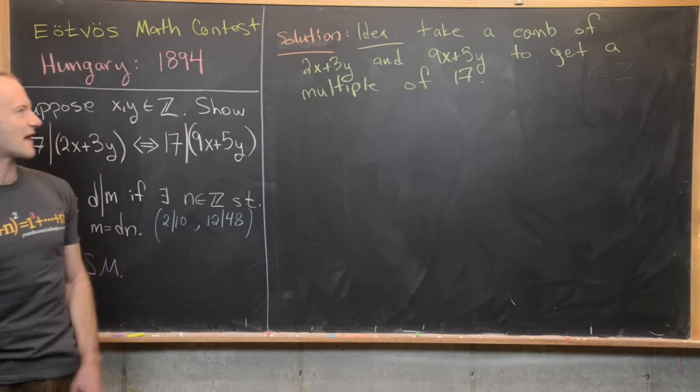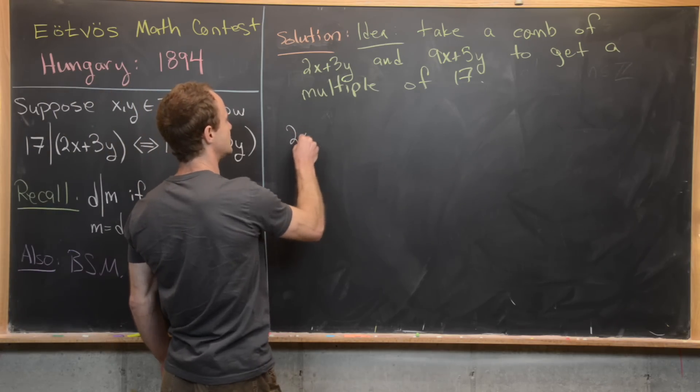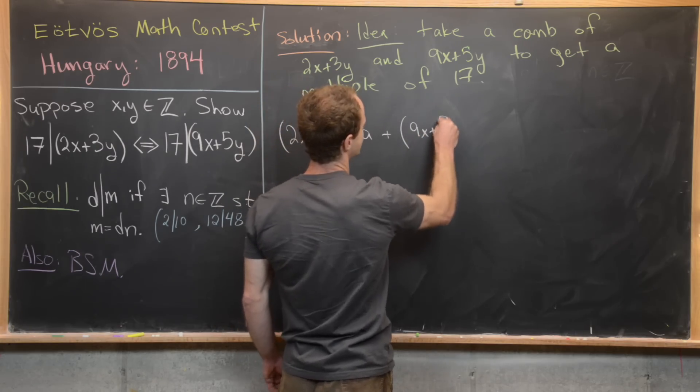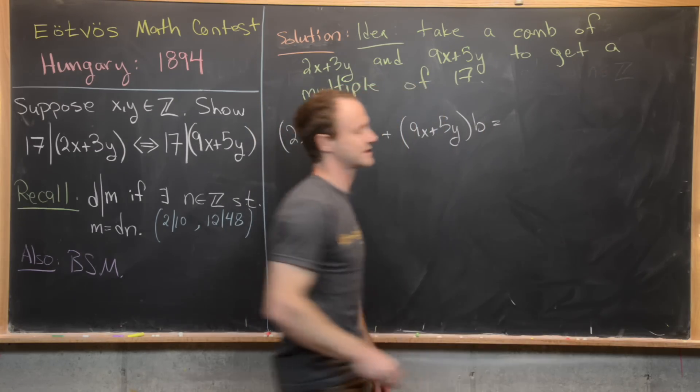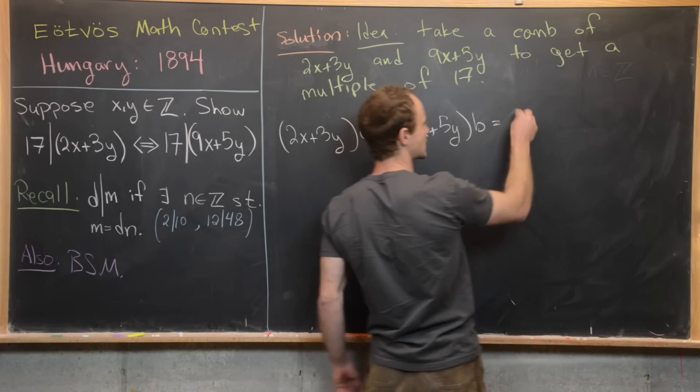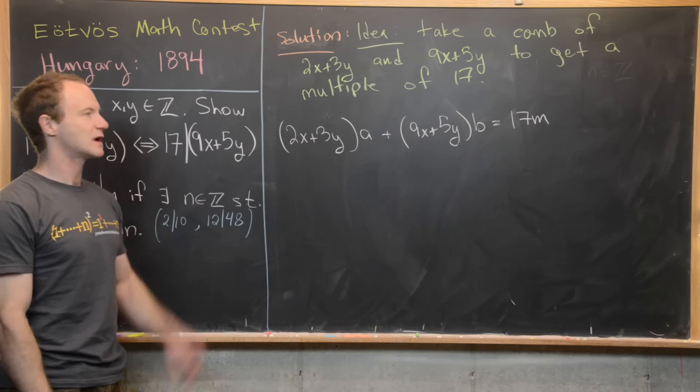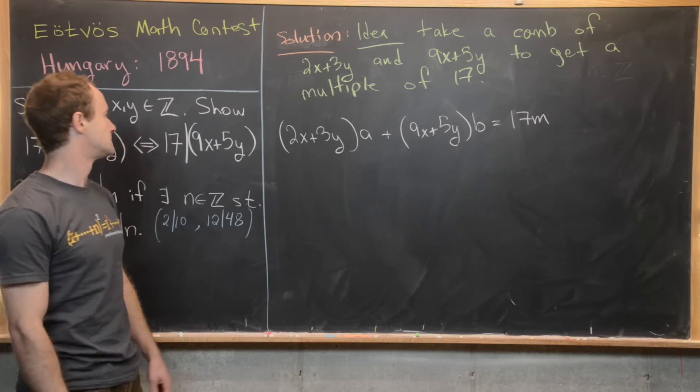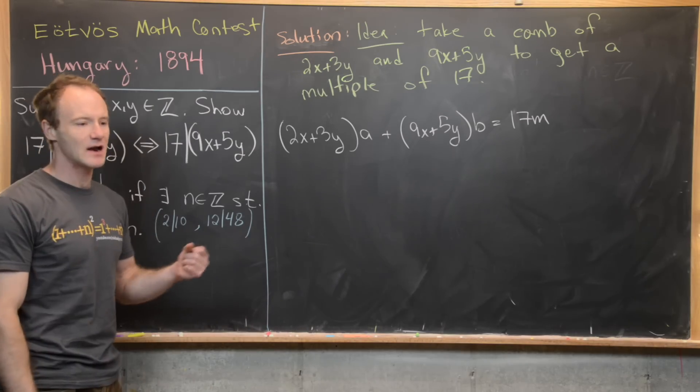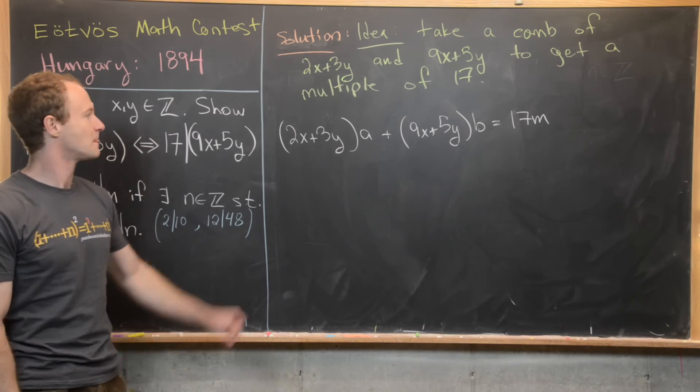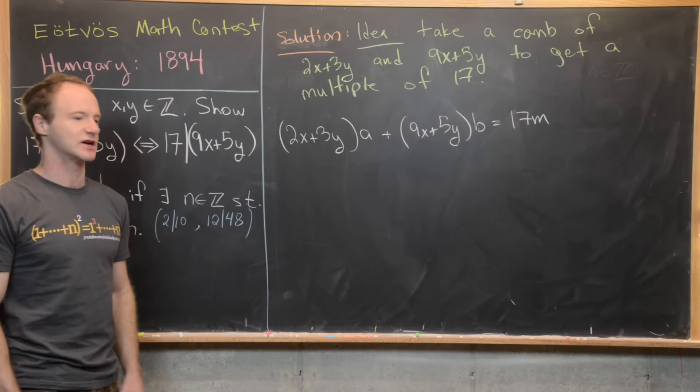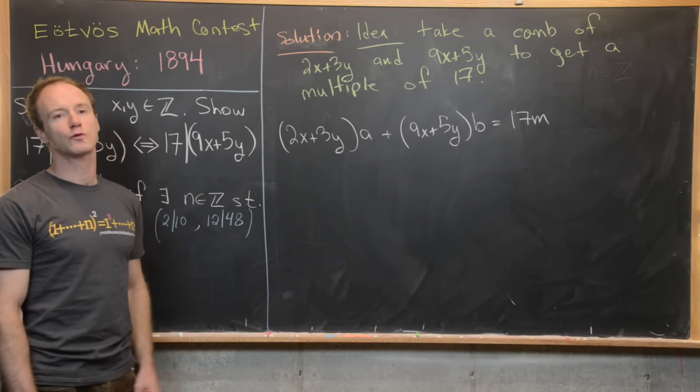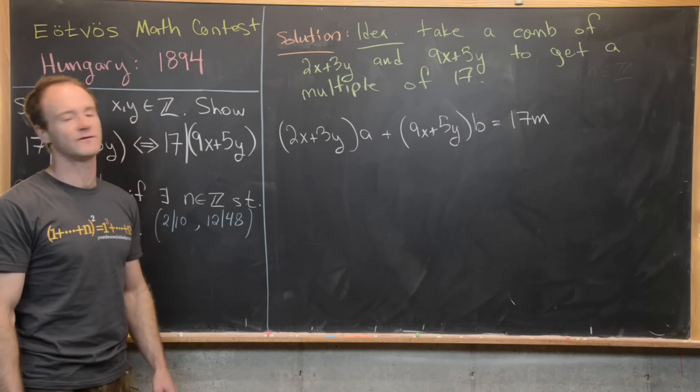So we want to take a combination of 2x plus 3y and 9x plus 5y to get a multiple of 17. So let's see how that might go. In other words, we want to do 2x plus 3y times a plus 9x plus 5y times b equals a multiple of 17. So maybe let's call that 17m. Now I want to pay attention to what is given to me and what I have control over. So x and y are given to me. I don't have any control over those. I can't change those. But a and b are of my introduction, which means I can tweak those to make all of this work out.